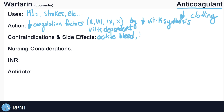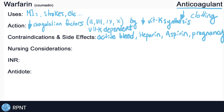Warfarin is also contraindicated with other medications that can cause increased bleeding — just to name a few: aspirin and heparin, both of which will cause bleeding. Warfarin is also contraindicated during pregnancy because it can pose some unwanted risks towards fetal development. Bleeding is going to be the number one side effect to look out for with warfarin, but it can also cause nausea, vomiting, and many other side effects.